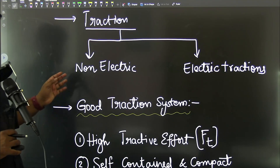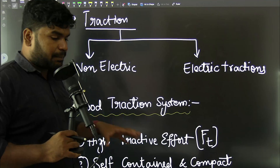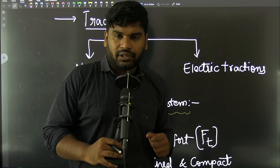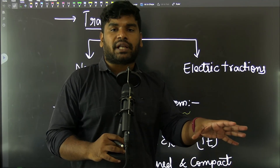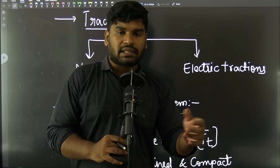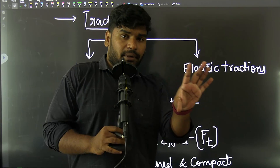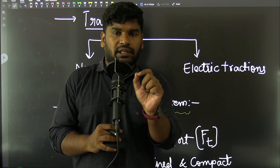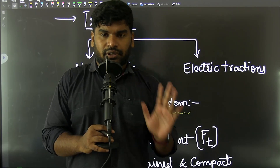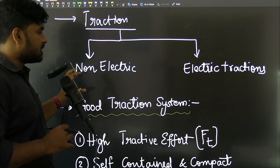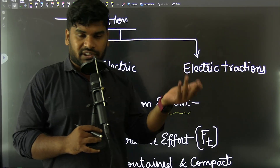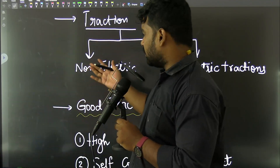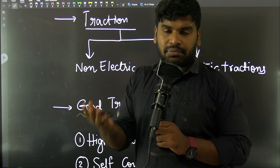Traction is the process of moving any vehicle. If you are using electrical energy to move a vehicle, that is called electric traction. If electricity is not involved, it is called non-electric traction. For example, cars and bikes use IC engines running on petrol or diesel.